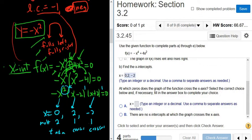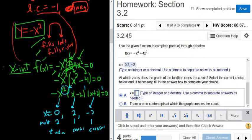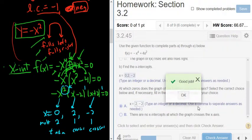So it looks like at 2 and negative 2, it's going to cross. That's what it wants, right? It says, at which 0 does the graph cross? Okay, so 2 and negative 2. Let's try that. Beautiful stuff.